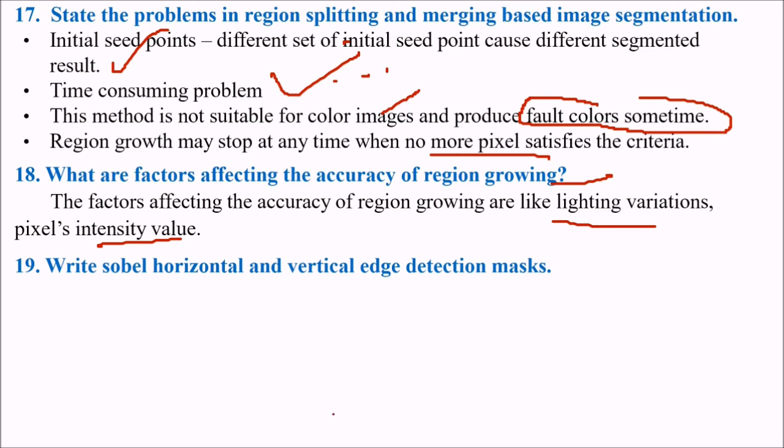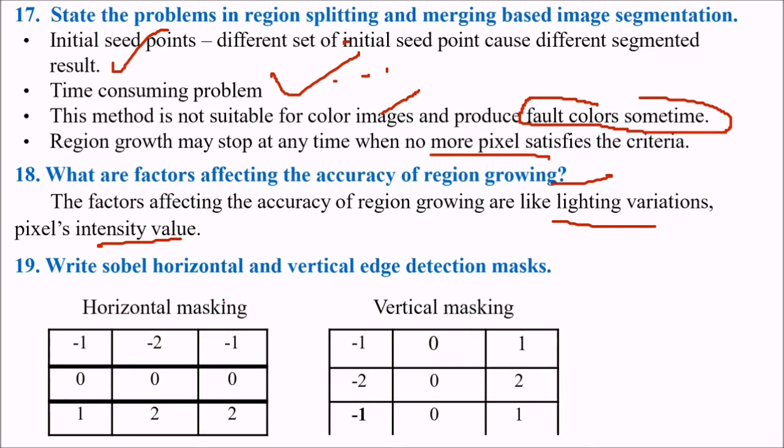Write Sobel horizontal and vertical edge detection mask. This is the Sobel horizontal. If you see in these two the difference in horizontal and vertical is minus is here. And in this vertical minus sign is here. And if you combine both of them the result will be zero. If you add the values here it will be zero. So this is the Sobel horizontal and vertical edge detection mask.